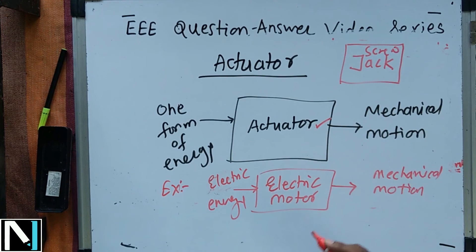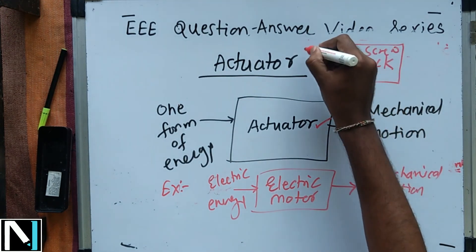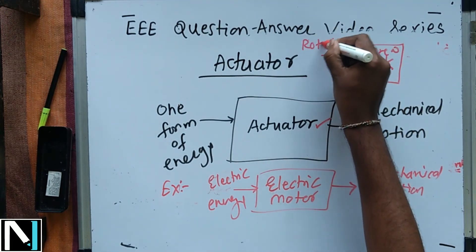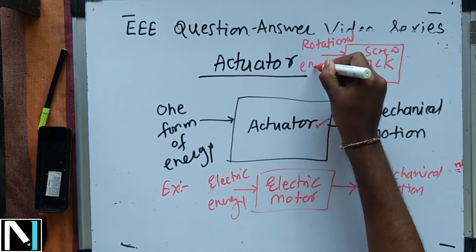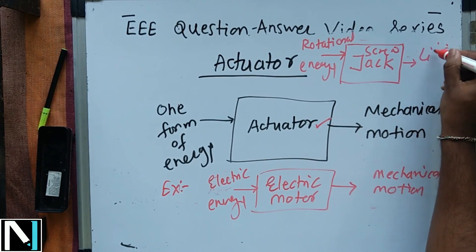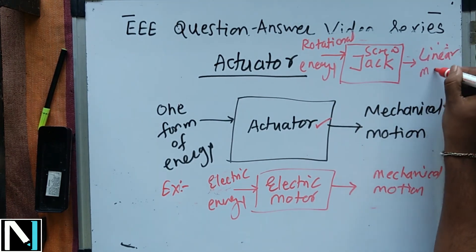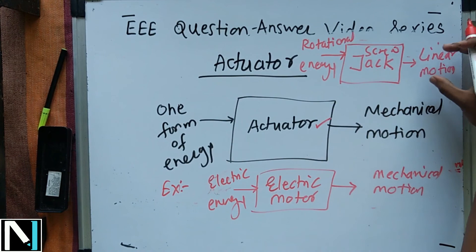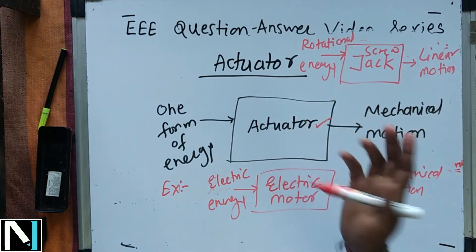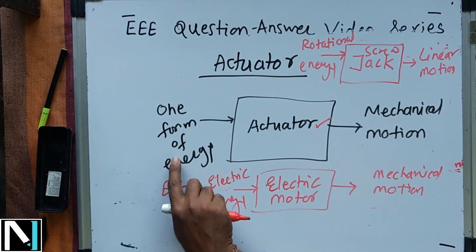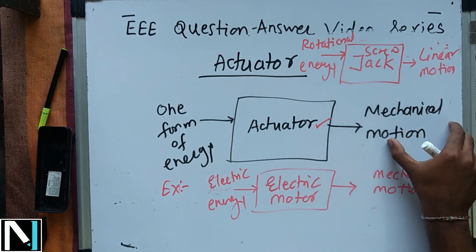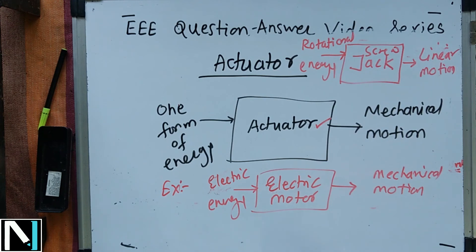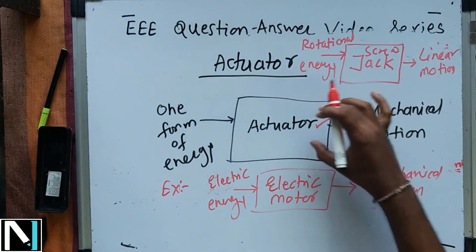Another example of an actuator is a screw jack on a four-wheeler, where you provide rotational energy and that rotational energy gets converted into linear motion. In case of an actuator, you are always dealing with mechanical motion. So an actuator can be defined as a device which converts one form of energy into mechanical motion. In the exam, there may be a comparison question on sensor, actuator, and transducer, which you can answer using these definitions and examples.